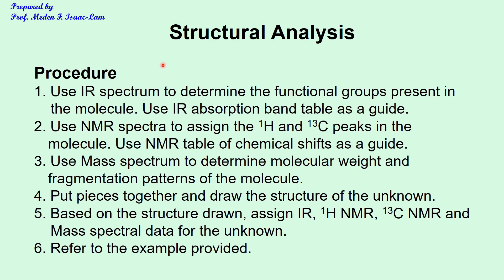The procedure uses the IR spectrum first to determine functional groups, which is very useful because it immediately tells you what functional groups are present. Next, the mass spectrum gives you the molecular weight right away, so you must have the right number of carbons, H's, N's, O's, or halogens. You can also go directly to the NMR spectrum, and the structure and data should never contradict each other.